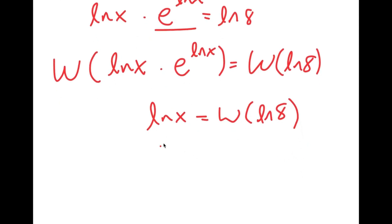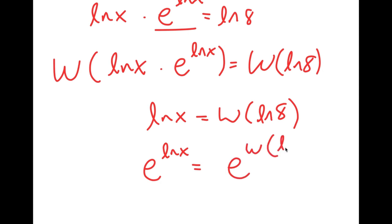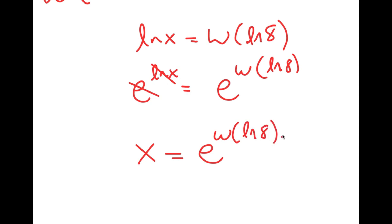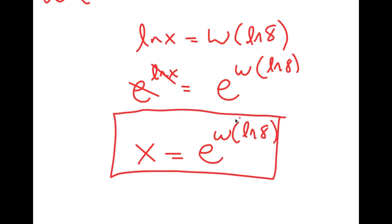Now I'm going to take e to the power of both sides. So I get e to the power of ln x is equal to e to the power of W of ln 8. And e and ln cancel out. So I get x is equal to e to the power of W of ln 8. This is my value of x.